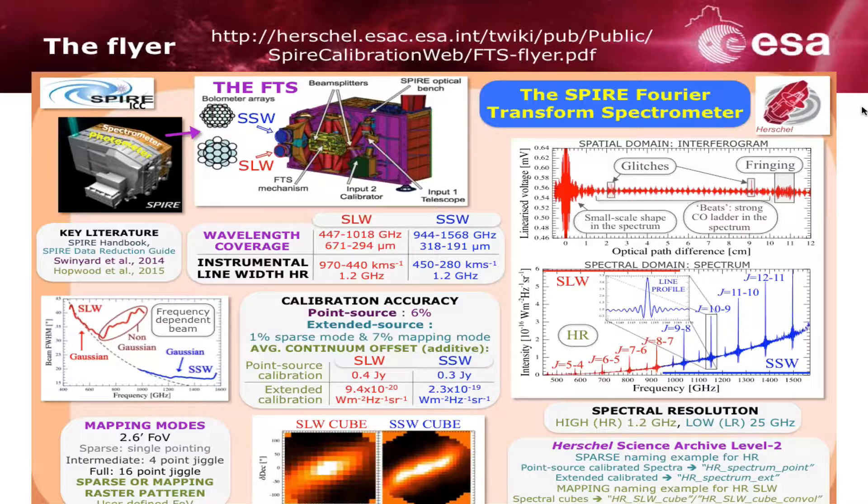I'm just showing the FTS flyer here because it is handy. All the information you can ever want to know about the FTS in one A4 sheet — you have the calibration accuracy and images of the spectra and interferogram cube. So this is really a very handy piece of information to have.